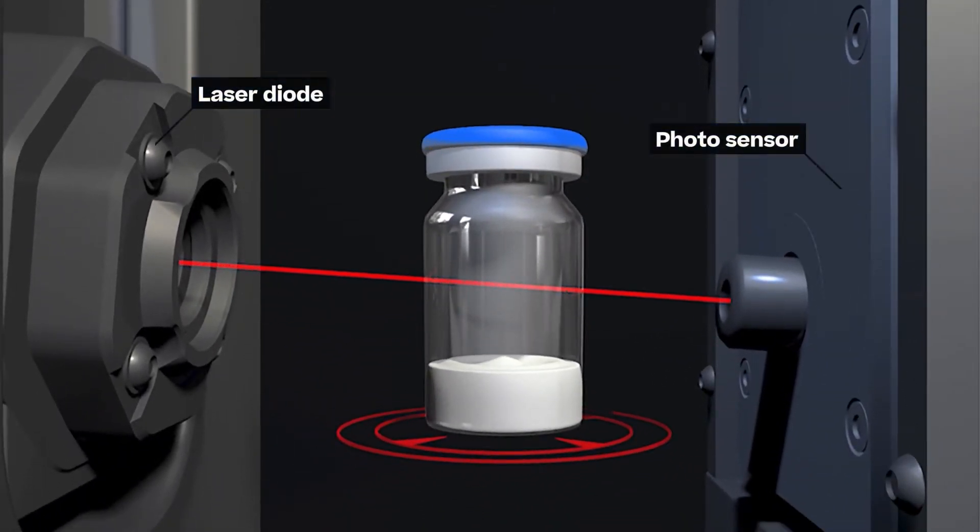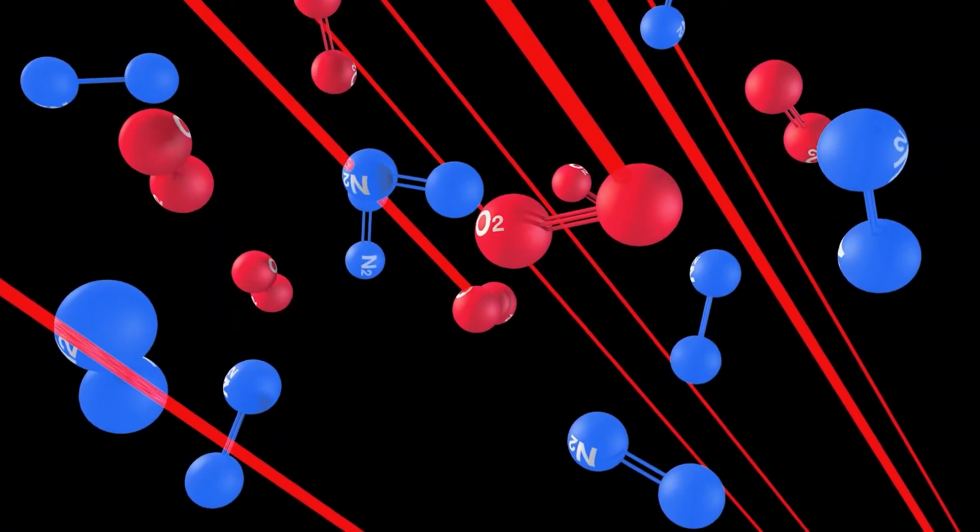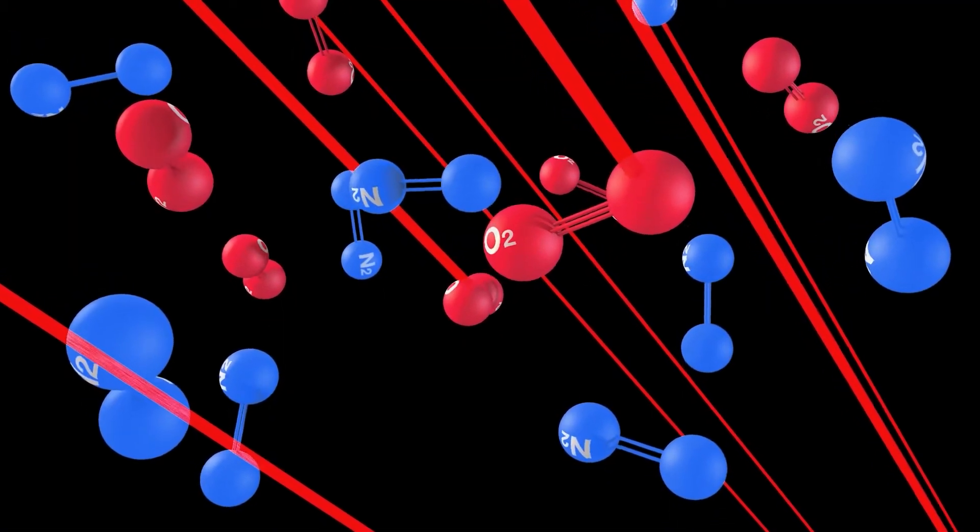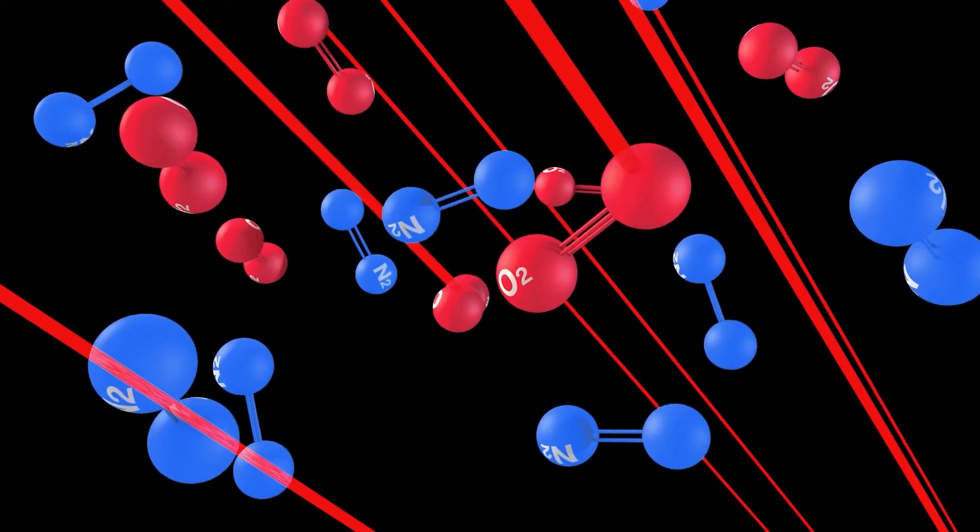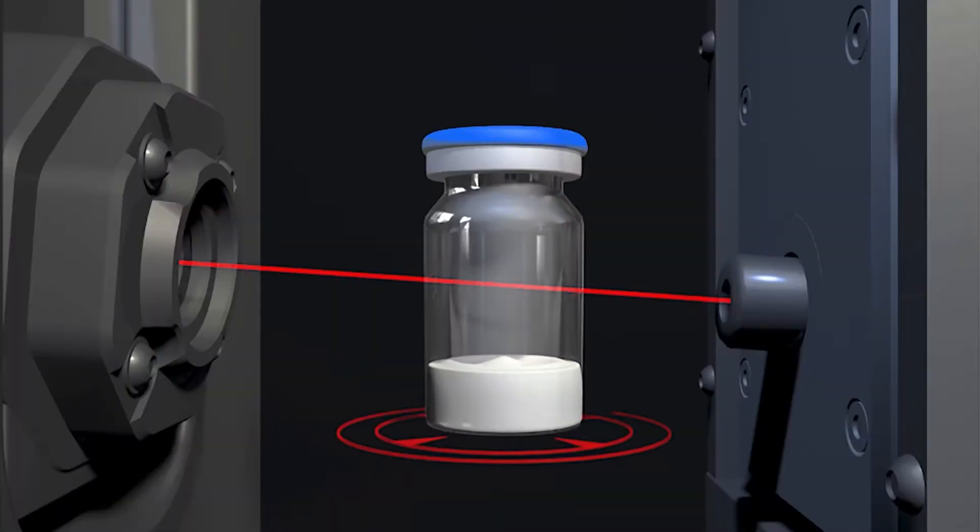A laser beam tuned to a specific wavelength range is directed through the vial above the lyocake. Oxygen molecules absorb a specific wavelength. The more oxygen the vial contains, the greater the deviations from a predetermined limit value.